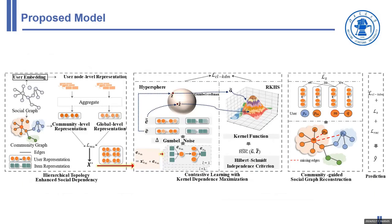Inspired by the Hilbert-Schmidt Independence Criterion (HSIC), we propose a Graph Contrastive Learning model with Kernel Dependence Maximization for Social Recommendation to address these challenges. We learn the nonlinear dependence in Hilbert space for robust and generalizable recommendation.